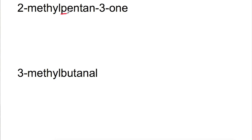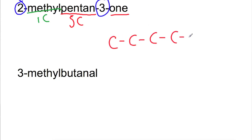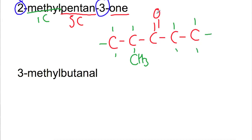Here are some names that you can try drawing out. Remember to start from the end of the name working forward — pause the video and then come back once you've given them a try. Looking at the first name, we've got 'pentan' and 'one', so we know that we have a ketone. Our carbonyl group is on number three and on the second carbon we have a methyl group. Drawing this out, we're going to have five carbons in a row, with a double bond to oxygen on the third carbon and a methyl group on the second carbon. Then remember to fill in so that every carbon has four bonds.